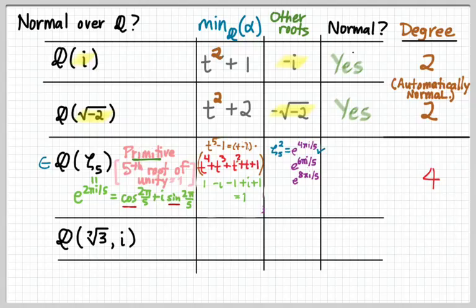So that root's got to be in there. What about e to the 6 pi i over 5? Zeta 5 cubed. Therefore, it belongs. e to the 8 pi i over 5. Zeta 5 to the 4th. Therefore, it belongs.